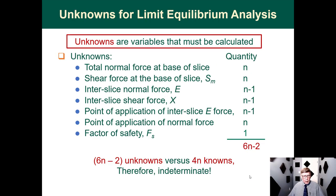Now let's count the unknowns. The normal force at the base of each slice is unknown, the shear force at the base is unknown, the inter-slice normal forces are n-1 unknowns, and likewise the inter-slice shear forces plus their points of application. There is also one factor of safety. Adding all these unknowns together gives a total of 6n minus 2. Since 6n exceeds 4n, we have more unknowns than equations, and therefore the problem is indeterminate.